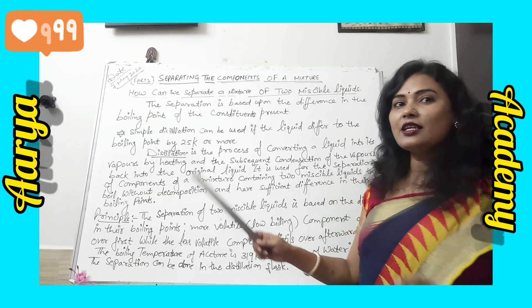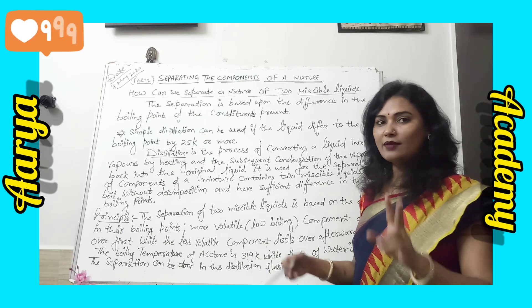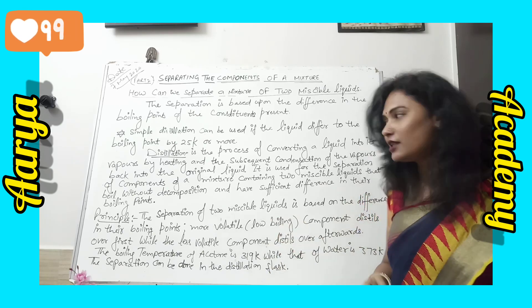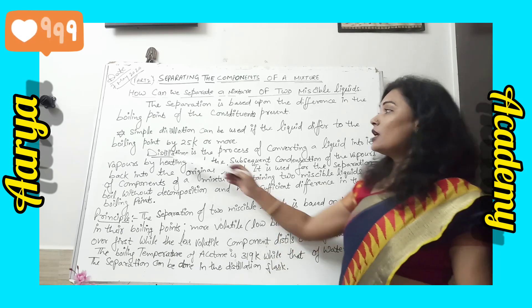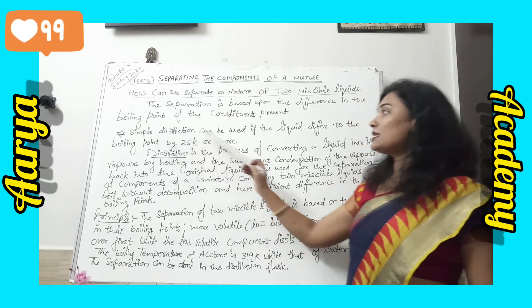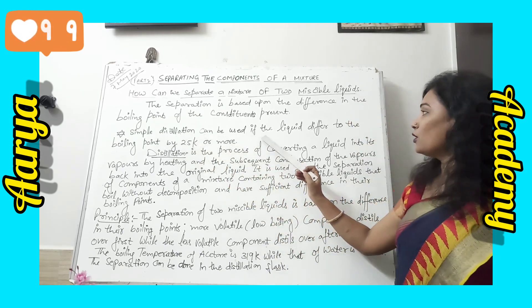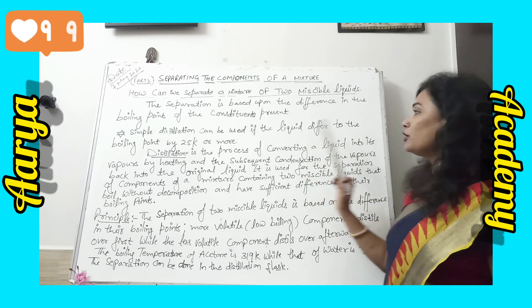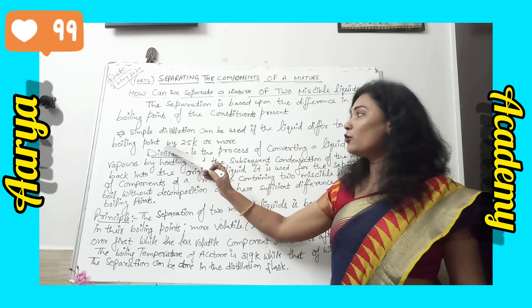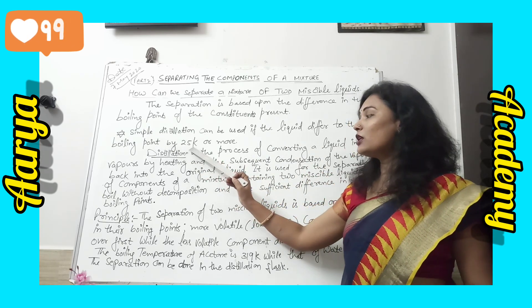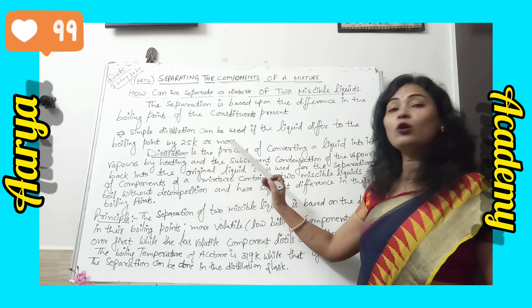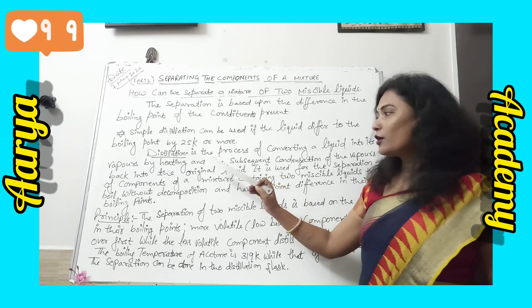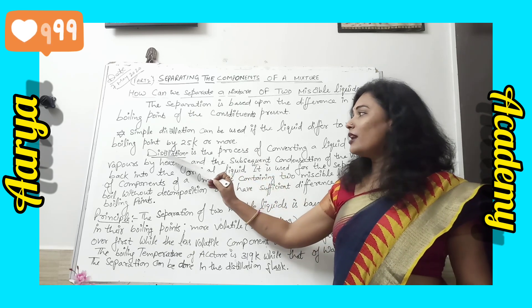We can separate miscible liquids by the distillation method. Distillation is of two types: simple distillation and fractional distillation. Simple distillation can be used if the liquids differ in their boiling points by 25 Kelvin or more.